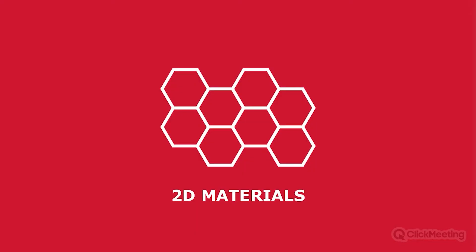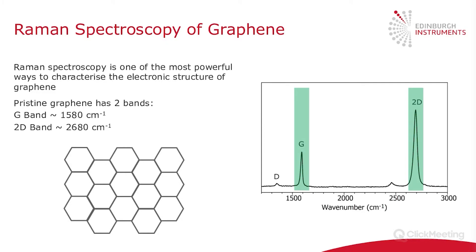That brings me to the first application section: looking at 2D materials. The most famous 2D material is by far graphene. Graphene has excellent electronic, thermal, and structural properties, making it a very promising material for semiconductor and electronic devices. Raman microscopy has established itself as one of the optimum ways to investigate graphene's electronic properties. In fact, something like 30% of confocal Raman microscope papers published last year were on graphene — by far the biggest application.